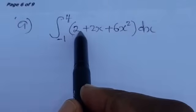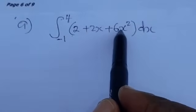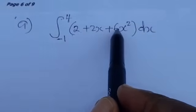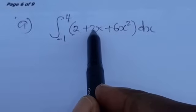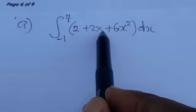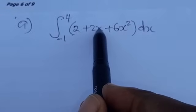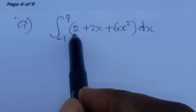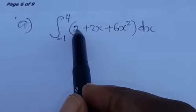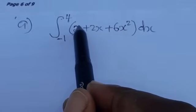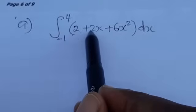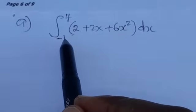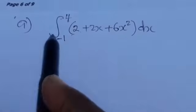When you look at the terms in this function, we have three terms. You can see that two of the terms have x's, but this first term, 2, has no x. So before we begin to integrate, let's first rewrite this function such that this 2 is going to have an x.